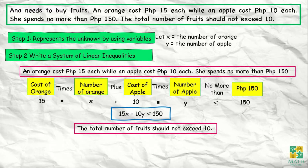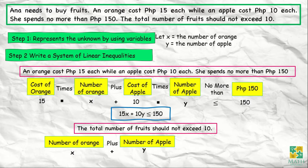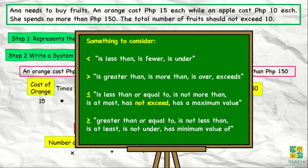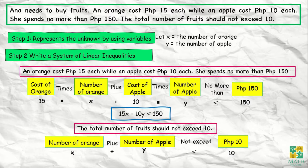Next statement: the total number of fruits should not exceed 10. So the number of oranges, which is x, plus the number of apples, which is y, should not exceed 10. 'Not exceed' means we use the symbol less than or equal to. So our second linear inequality is x plus y is less than or equal to 10.